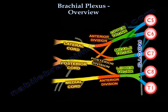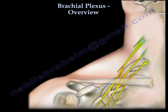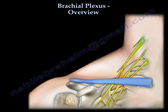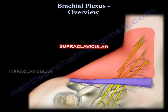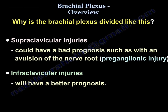You end with the branches. The brachial plexus is divided into supraclavicular and infraclavicular parts, using the clavicle as a marker. Anything above the clavicle is supraclavicular, and anything below is infraclavicular. Supraclavicular injuries have a bad prognosis and can involve avulsion from the root, while infraclavicular injuries have a better prognosis.